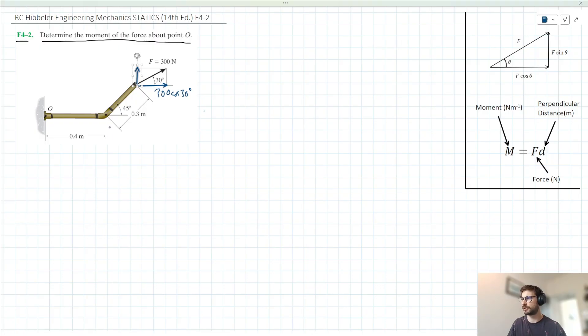So we want to take moments about point O here. Now, in order to do that, we're basically going to want the perpendicular distance from point O to this point here where force F is acting. Now, those perpendicular distances, in the case of the vertical component, that distance is going to look something like this, right? In the case of the horizontal component, that's going to look something like this length here, essentially.